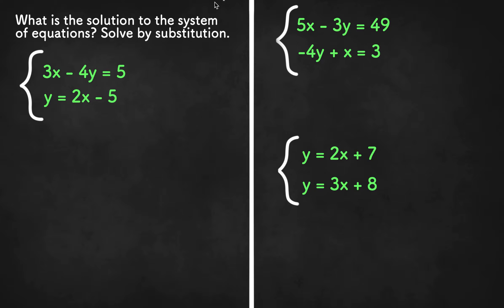So here we are asked to find the solution to the system of equations by substitution. When we are solving any system of equations by substitution, we want to make sure one of the variables is isolated and it's by itself. In this case we have y, here we have x, and on the last example we have both y's isolated.